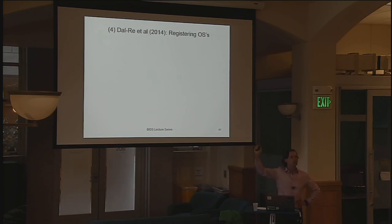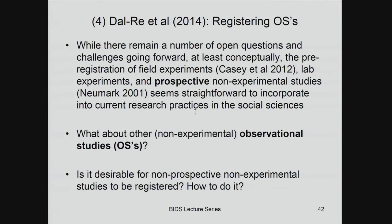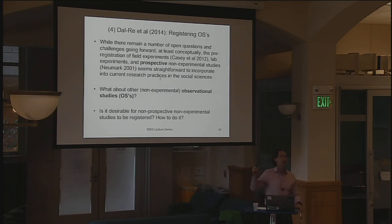There's a really nice paper by Del Rey et al., co-authored with John Ioannidis at Stanford — an eminent medical researcher and scholar of transparency — where they make the case not just for registering prospective observational studies, but for registering all observational studies, including non-experimental, non-prospective ones. They say yes, it's desirable, and give a bunch of arguments why. I'm pretty reluctant to support registering non-prospective studies, though, and I'll explain why.